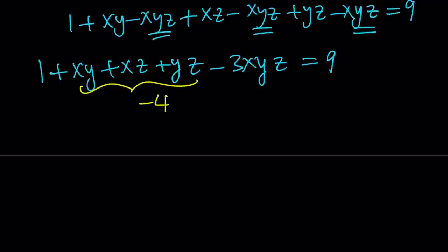And then if you add it to both sides, you're going to get negative 3xyz equals 12, and xyz is equal to negative 4.